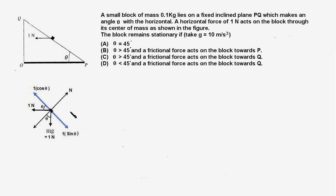Is the FBD complete? The answer is no, because we have missed out the frictional force. But in which direction does the friction force act? We do not know, because we do not know the direction in which the block has a tendency to move. We have to first find the resultant of the force pulling it up the plane and the force pulling it down the plane. Having found the resultant, we can determine the direction of the frictional force, as it will oppose the resultant to ensure the net force on the block is zero.